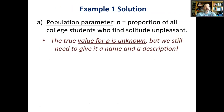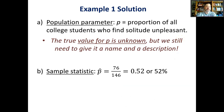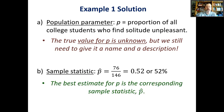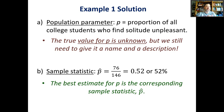Researchers collect data from a sample and compute the sample statistic, which is P-hat. That's the best estimate — a technical term meaning point estimate. Parameters are unknown; statistics are known. Every parameter has a single statistic from a sample that best describes the corresponding parameter in the population. So P-hat equals 76 divided by 146 is our best estimate for P.